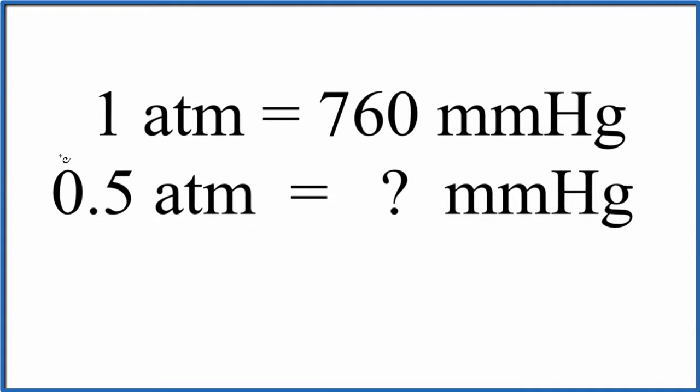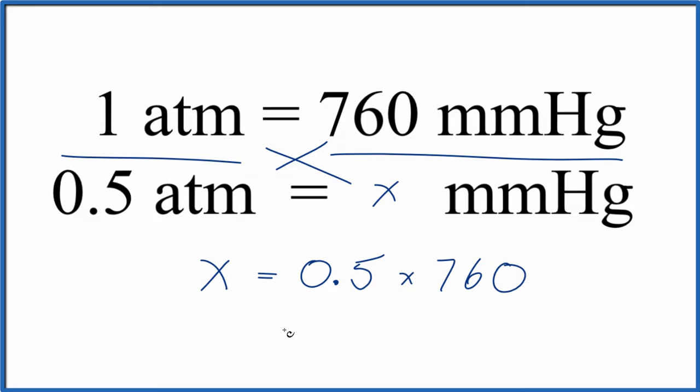The first way is we just set up a ratio here. We have 1 is to 0.5 as 760 is to x. So we cross multiply. We have 1 times x, that's x. And then we have 0.5 times 760. We end up with 380, and that'll be our millimeters of mercury. We solved for x. That's the first way. Works pretty well.